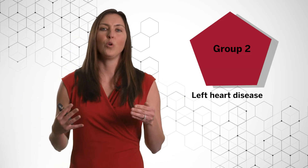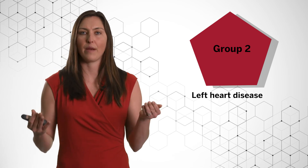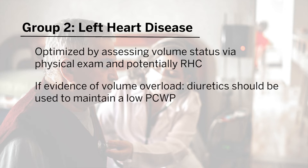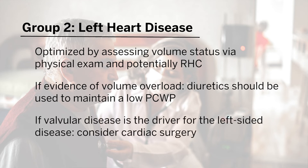We initially discussed group one or pulmonary arterial hypertension, and now we are moving on to group two, which is left-sided heart disease — the most common driver for pulmonary hypertension. Postcapillary pulmonary hypertension driven by left heart disease should be optimized by assessing volume status via physical exam or right heart catheterization. When patients have evidence of volume overload, diuretics should be used to maintain a low pulmonary capillary wedge pressure. If valvular disease is the driver, surgery should be considered to correct the cardiac function driving postcapillary pulmonary hypertension.